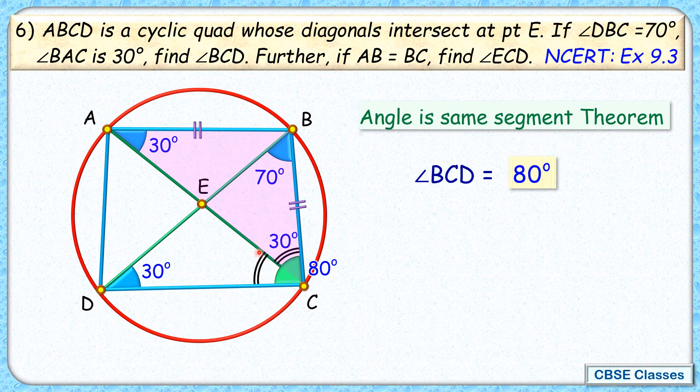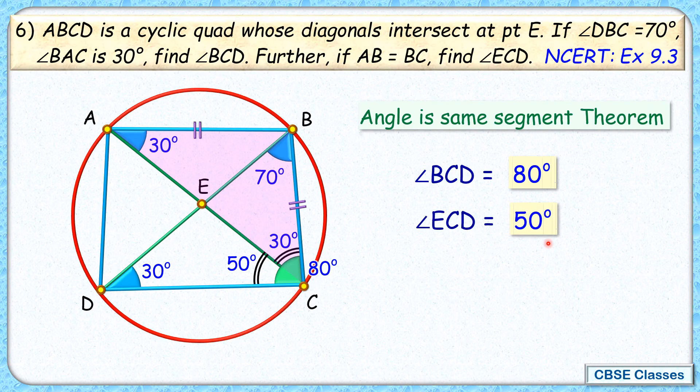Now here, this remaining angle will be 80 minus 30, or 50 degrees. And thus, angle ECD is 50 degrees. And these are the two angles we had to find. And that's our answer.